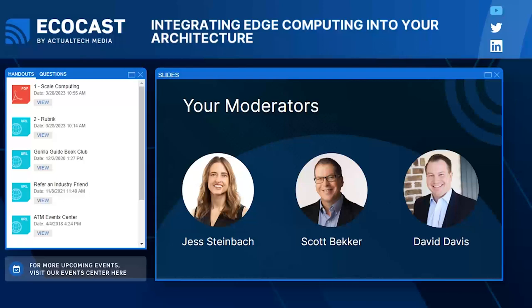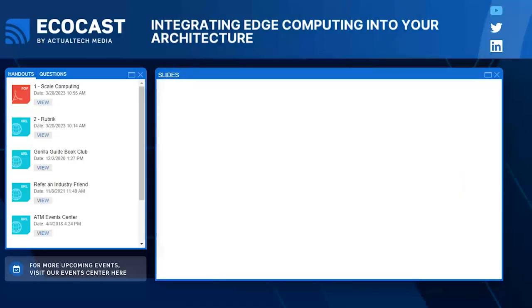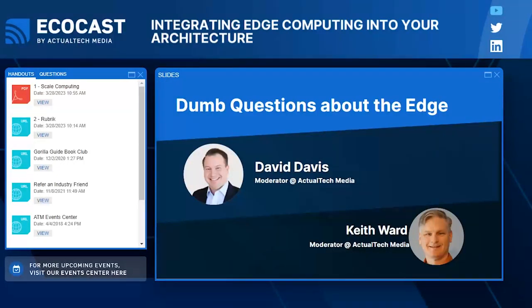As always, it's not just awesome content we're giving away — we also have fantastic prizes. Today we've got three Amazon gift cards worth $300 each, and we'll announce those after some of the sessions. We're going to get started with a keynote featuring David Davis and ATM moderator Keith Ward, who will walk us through some questions about edge computing.